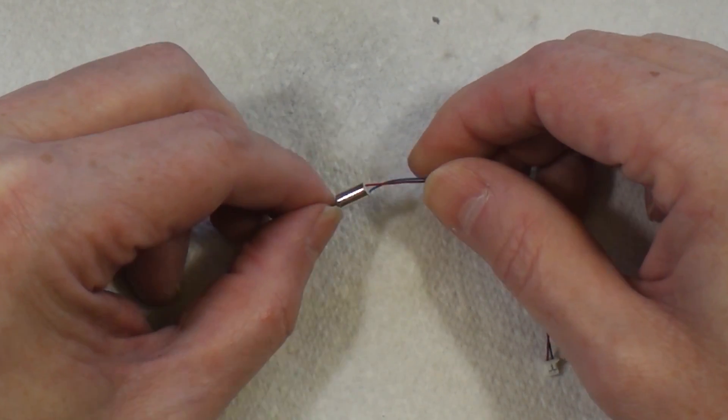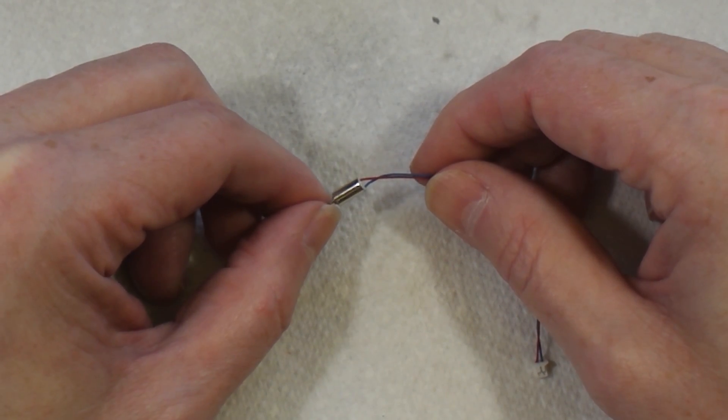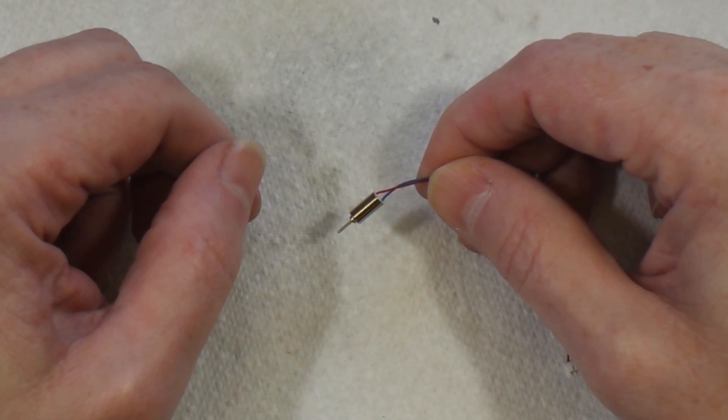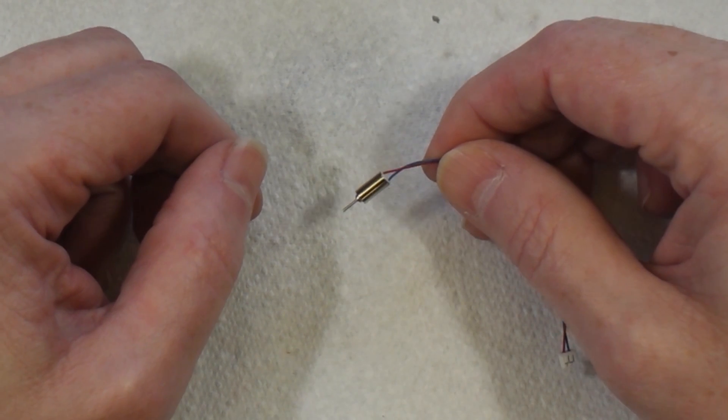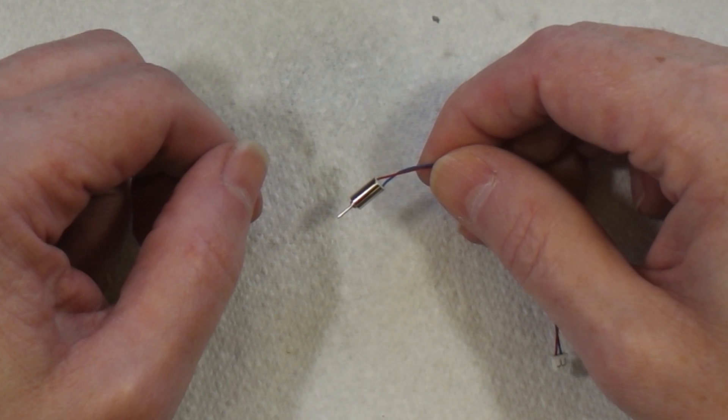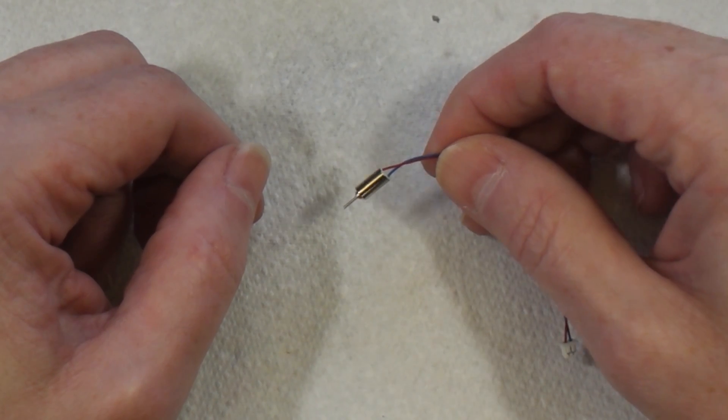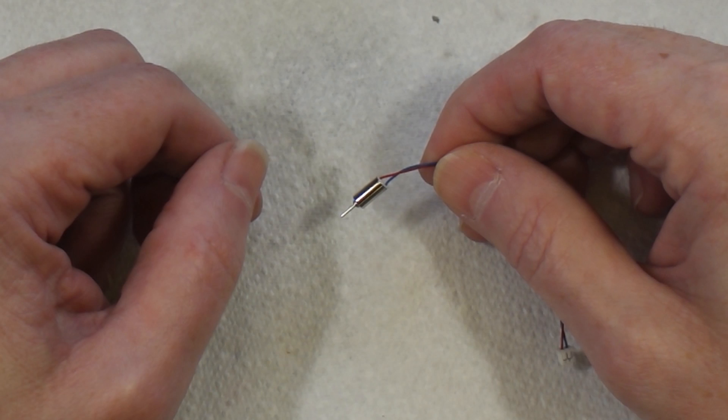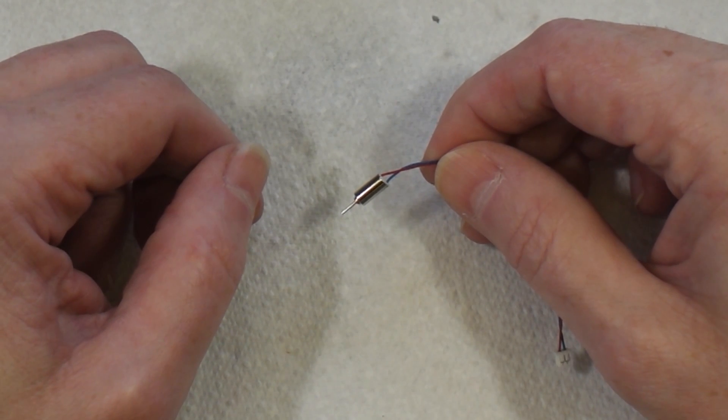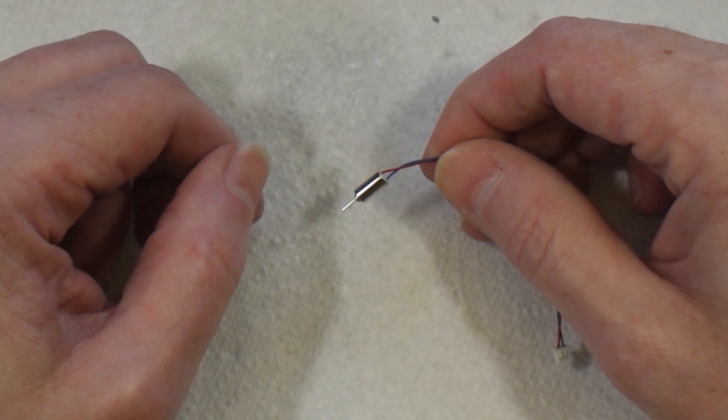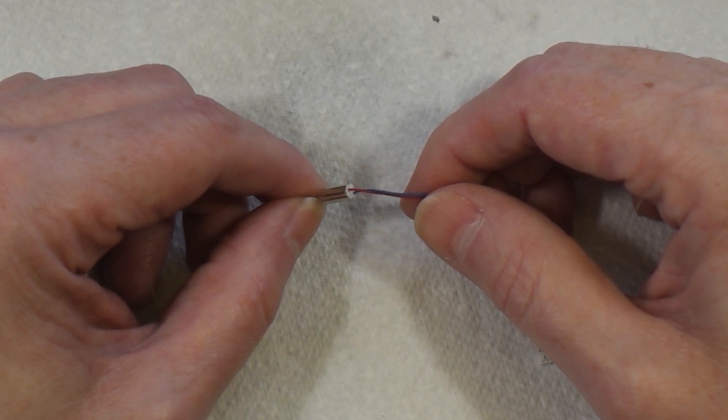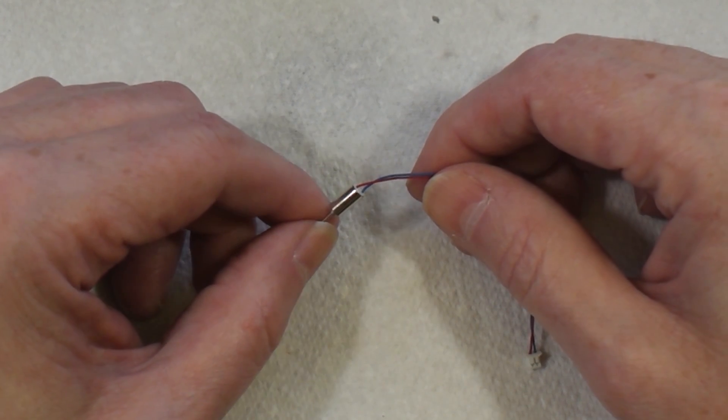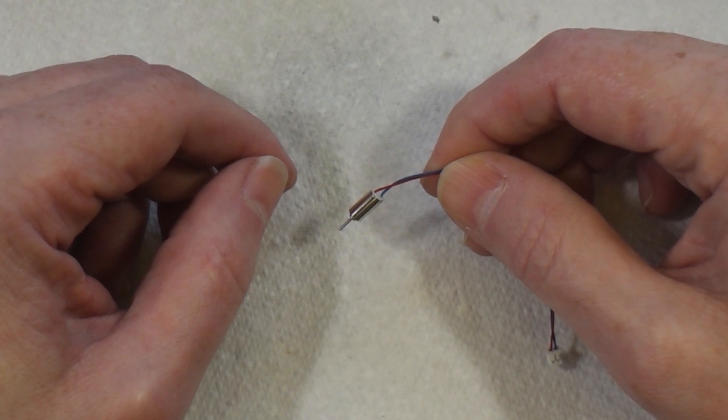But there is one small drawback to this plan. This motor spins at 70,000 RPM - 70,000 revolutions per minute. And I think it's going to be way too fast for a propeller. But I thought it might be fun to actually put a propeller on this and see what happens.